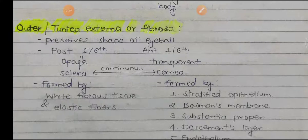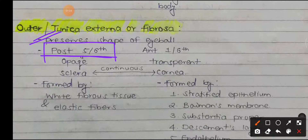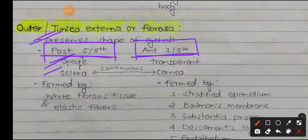The outer layer, tunica externa or fibrosa, preserves the shape of the eyeball. It is the outermost fibrous layer and has two parts: a posterior large part which is five-sixths of the total outer layer, and an anterior one-sixth. The posterior five-sixths is opaque and is known as the sclera, while the anterior one-sixth is the transparent cornea, through which light can enter.